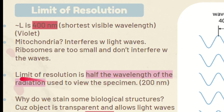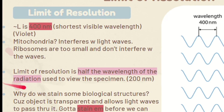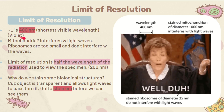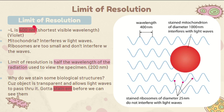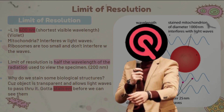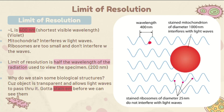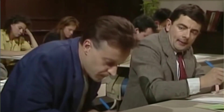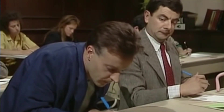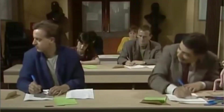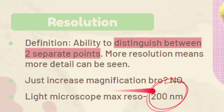The limit of resolution is literally just half the wavelength of radiation used to view a specimen. Our light microscopes, for example, use light as a source of radiation. The shortest wavelength of light is 400 nanometers, so our limit of resolution is therefore half of that — exactly 200 nanometers.